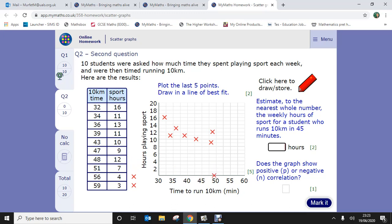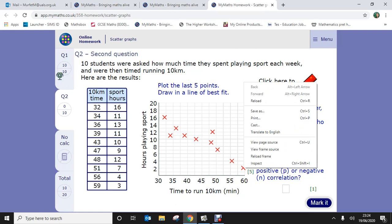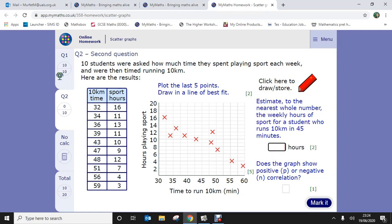We've got 51, 7. We've got 56 and 4. And then we've got 59 and 3. Now as you can see, the 3 is going to be 59. So we've plotted our points.